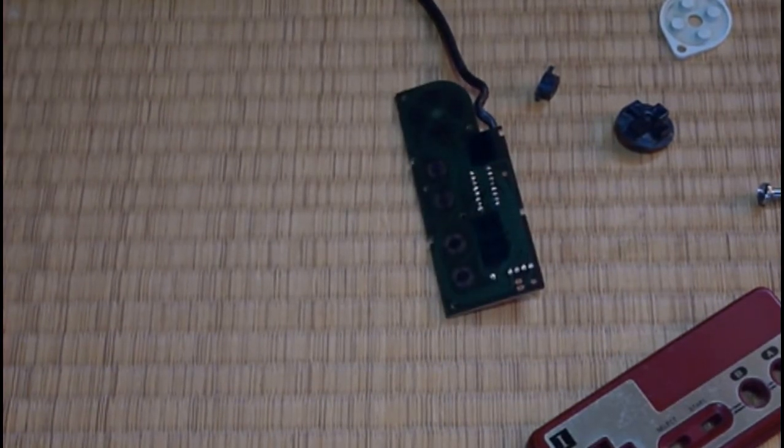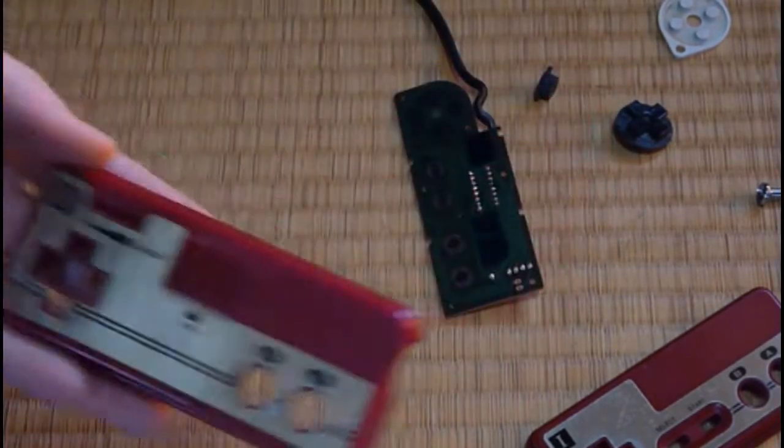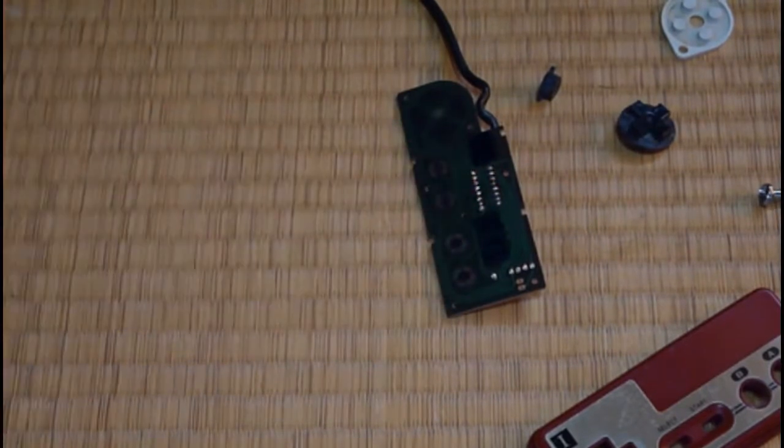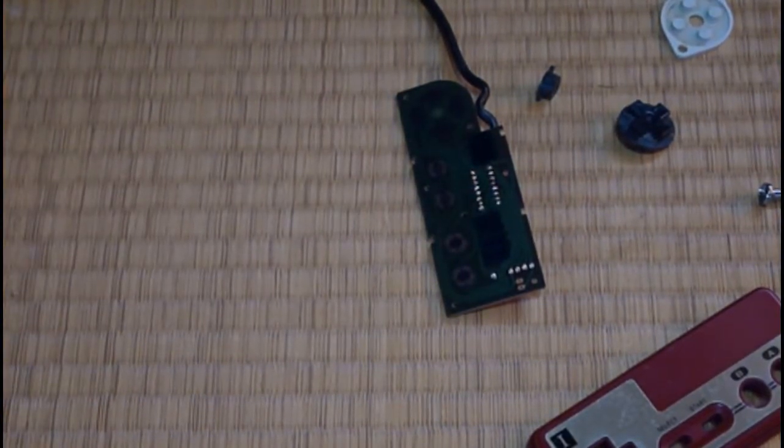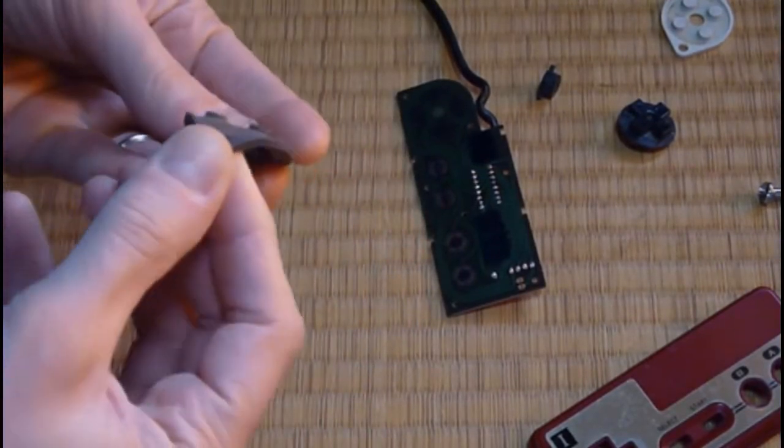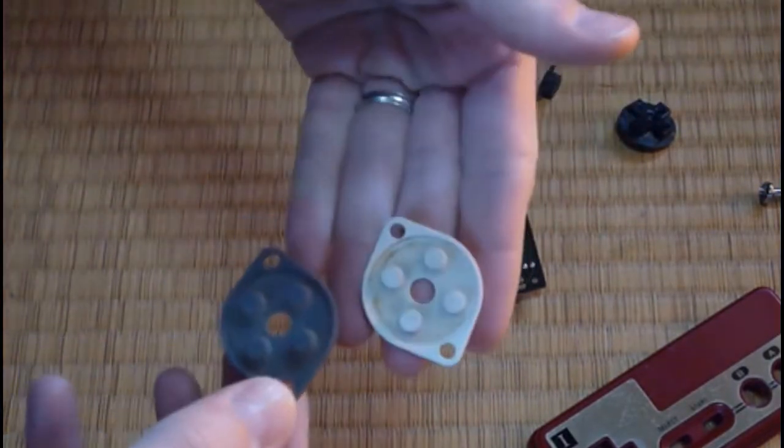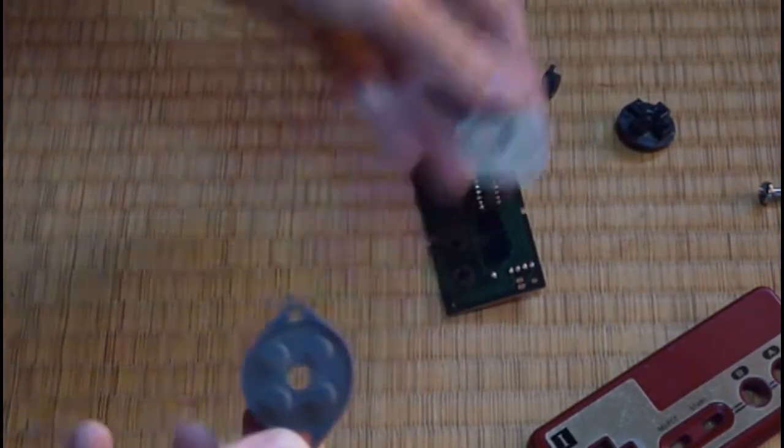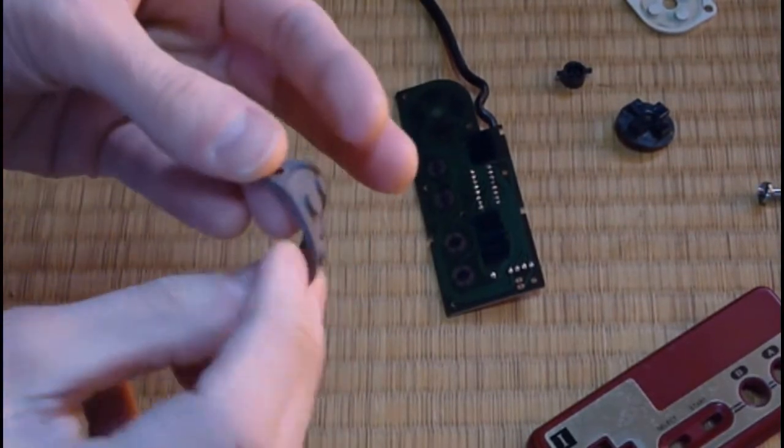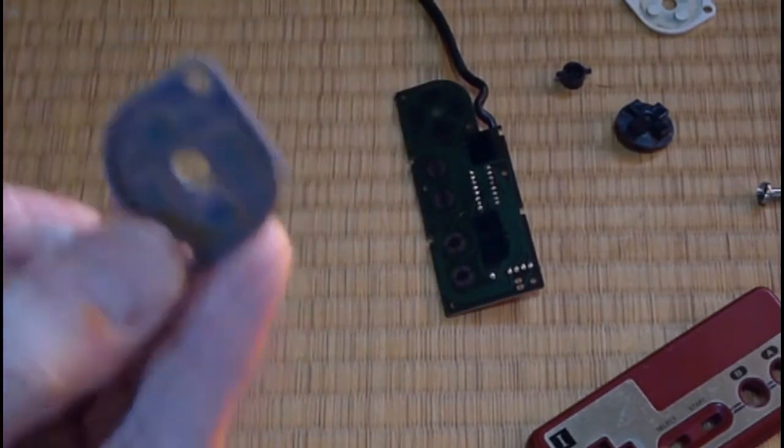Then I came across a really nice number two and it's kind of dirty on the outside. It looks like it's been played a little bit, but the up, down, left, right rubber part, it's a different color, but it's the same piece. And it's perfect. Well, not perfect, but it has no holes in it, no cracks in it. It looks really good. So I'm going to clean this up and put it in here.